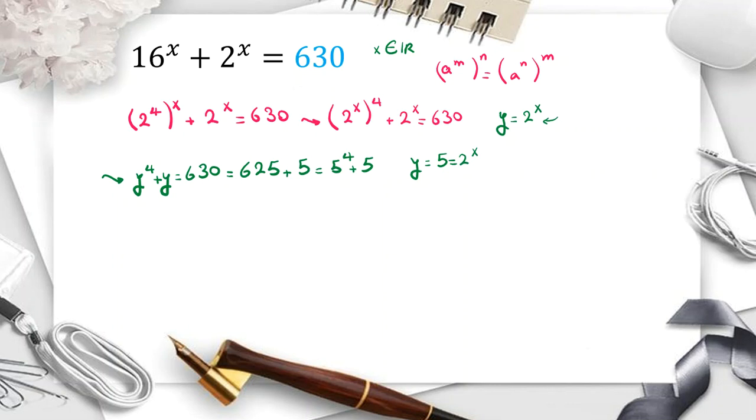So let me tell you one definition in logarithm. For example, if t equal to b to the w, if you want to write in terms of logarithm, w equal to log t base b. Now here, we conclude x equal to log 5 to the base 2. So we found one answer for x.